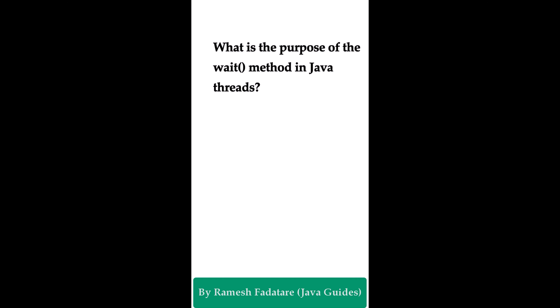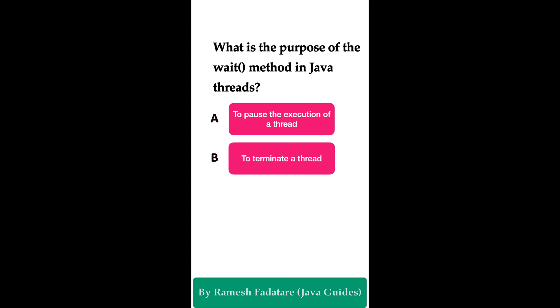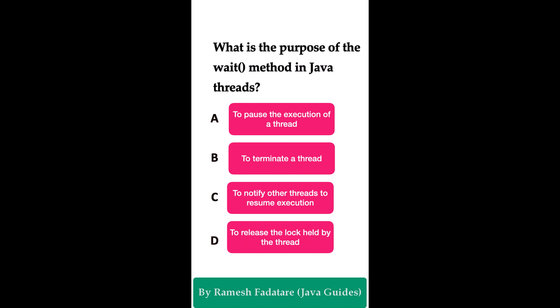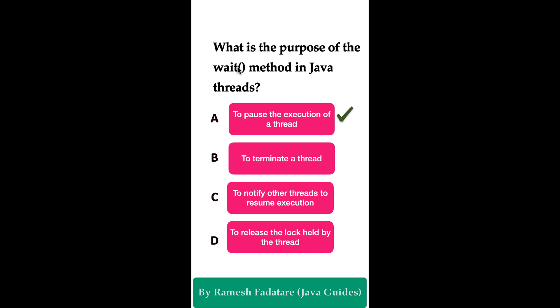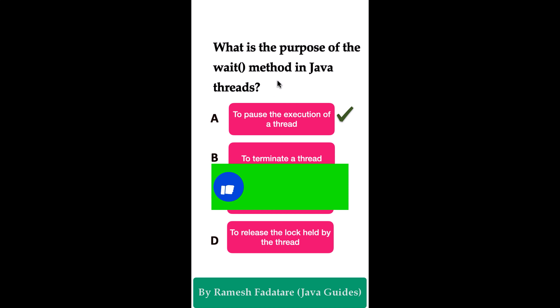What is the purpose of the wait() method in Java threads? Option A: it forces the execution of a thread. Option B: to terminate a thread. Option C: to notify other threads to resume execution. Option D: to release the lock held by the thread. The correct answer is option A — it forces the execution of a thread to pause. The wait() method forces the current thread's execution to pause until another thread notifies it to resume. When a thread calls wait(), it releases the lock it holds on the object and enters a waiting state.